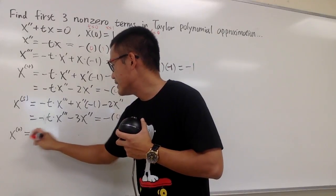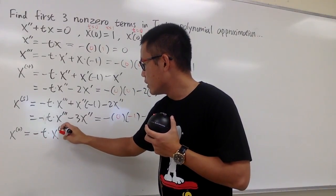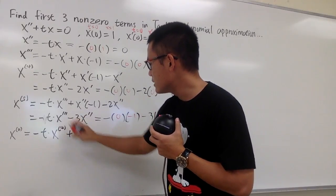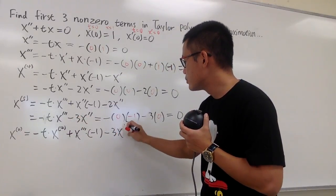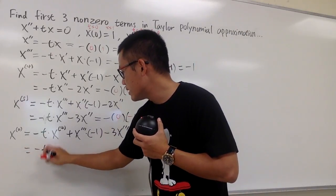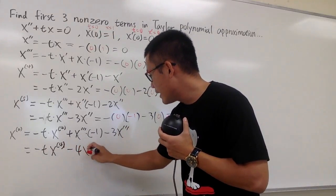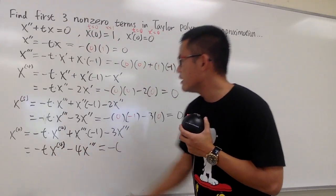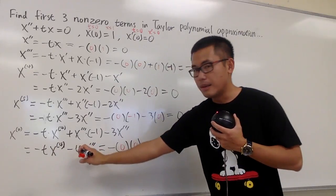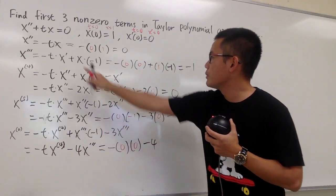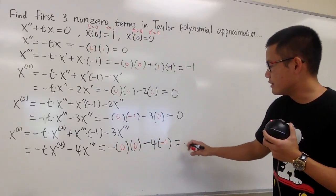For the sixth derivative x^(6), we differentiate again using the product rule: negative t times x^(4), plus x''' times negative 1, then differentiate negative 3x''' to get negative 3x'''. Combining terms: negative t times x^(4) minus 4x'''. Plugging in values: negative 0 times x^(4)(which is 0) gives 0, then minus 4 times x'''(which is negative 1). So we get 4 for the sixth derivative.